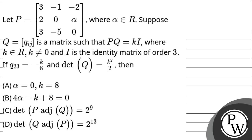Let us see the question. The question says: let P equal this given matrix where alpha belongs to real. Suppose Q = [Qij] is a matrix such that PQ = KI, where K belongs to real, K ≠ 0, and I is the identity matrix of order 3. Also, Q23 = -K/8 and determinant of Q = K²/2. These are the given options.